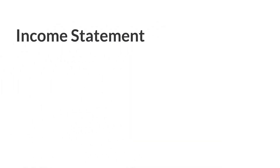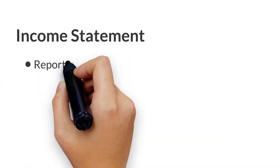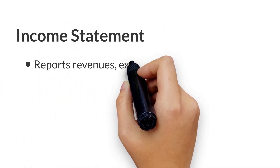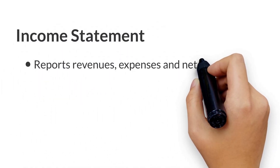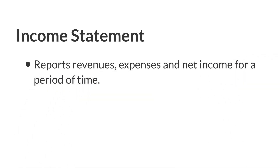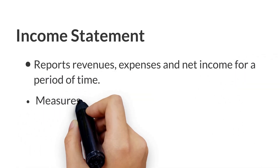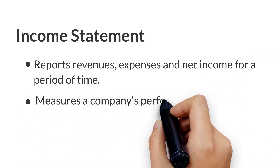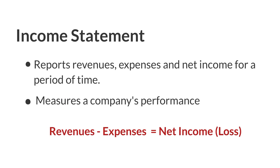The income statement reports revenues, expenses, and net income for a period of time. It measures a company's performance. Net income, which is the primary performance measure, is computed by subtracting expenses from revenue.